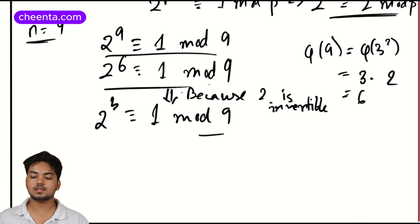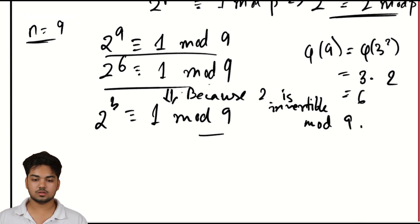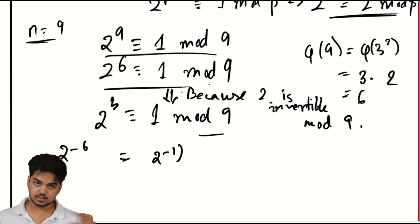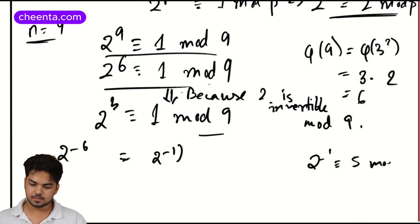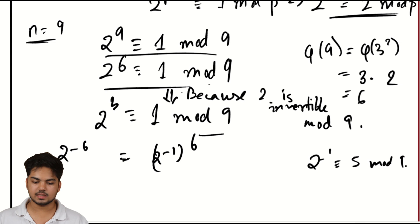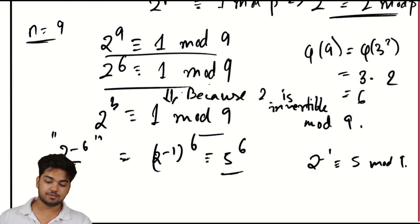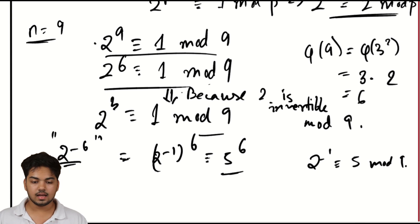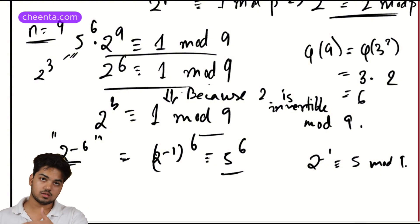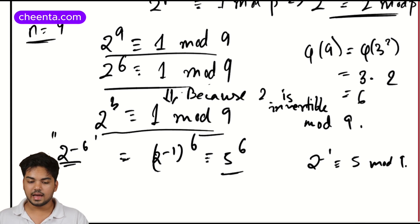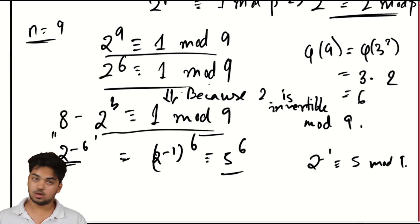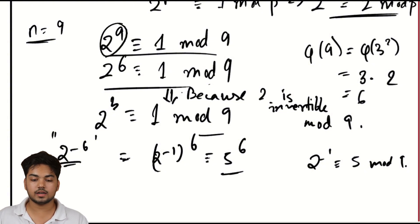Since 2 is invertible mod 9, I can take negative powers. So 2^(−6) makes sense — 2^(−1) exists mod 9. In this case, 2 inverse is 5 mod 9, since 5×2=10≡1 mod 9. So 2^(−6) means (2^(−1))^6 = 5^6. Multiplying 2^9 with 5^6 gives 2^3, because 5^6 is the inverse of 2^6. This is a reasonable operation. And now it gives a contradiction: 2^3 = 8, and 8 ≢ 1 mod 9. So you get a contradiction without even calculating 2^9 directly.